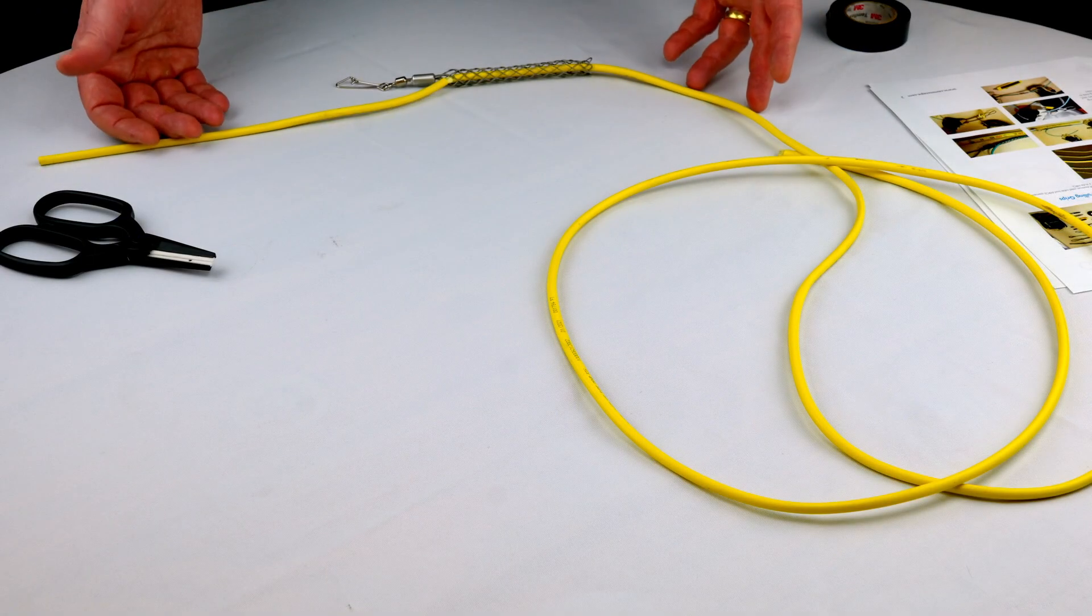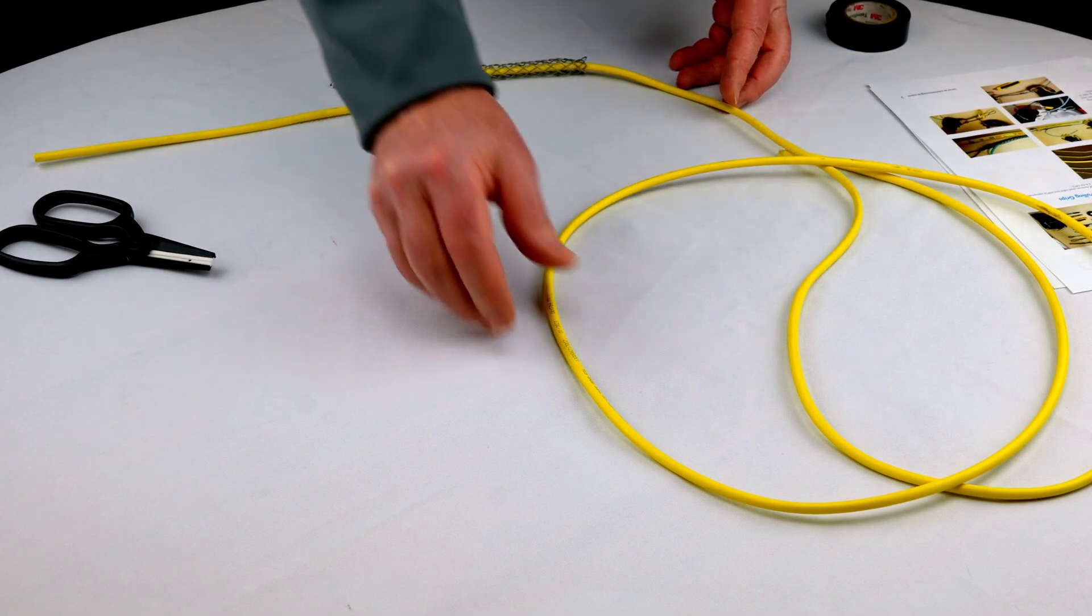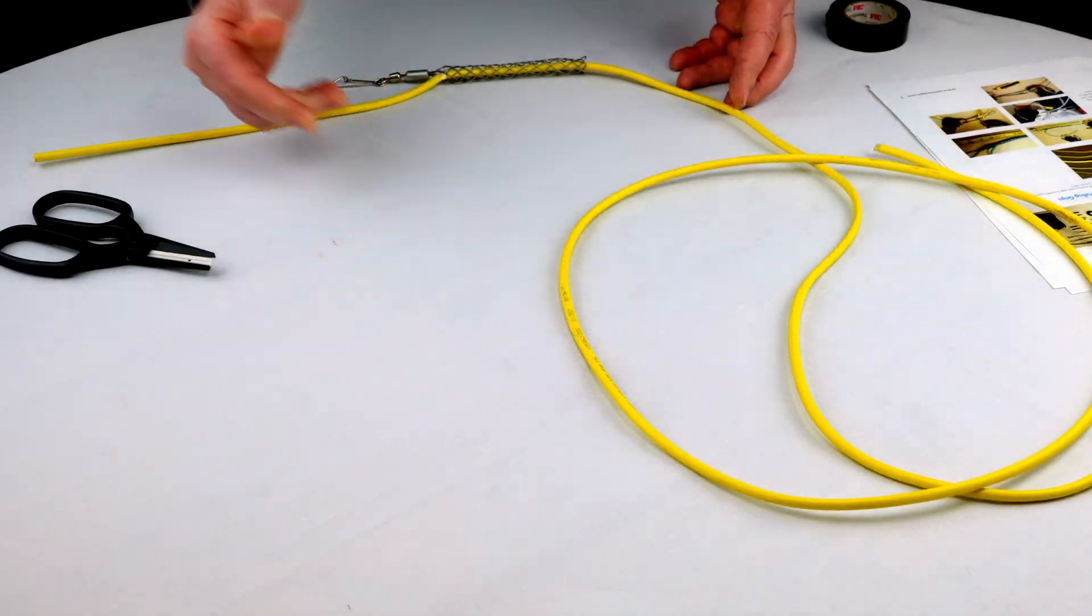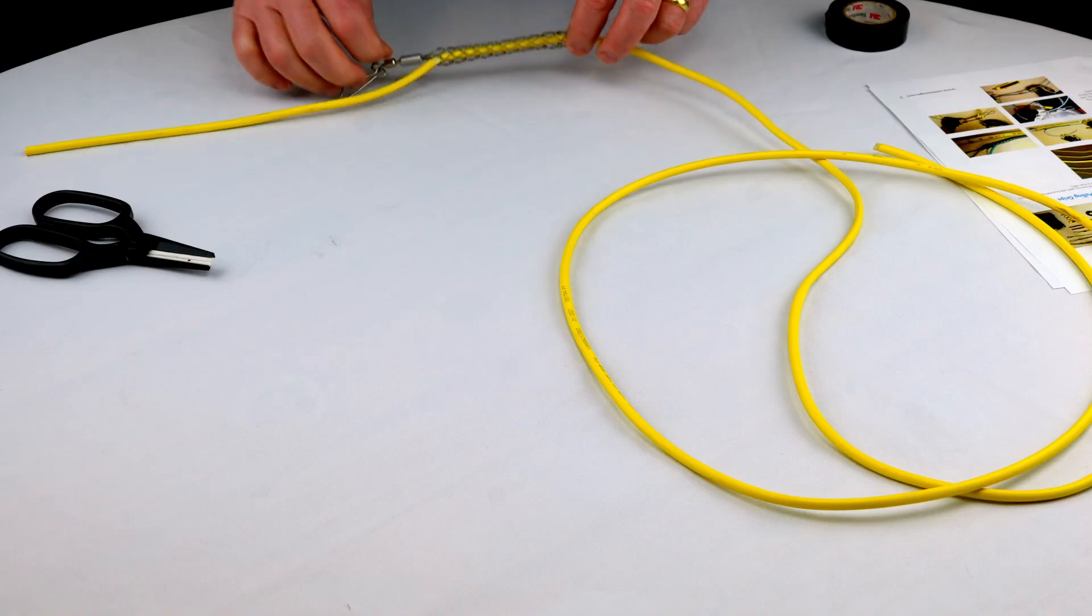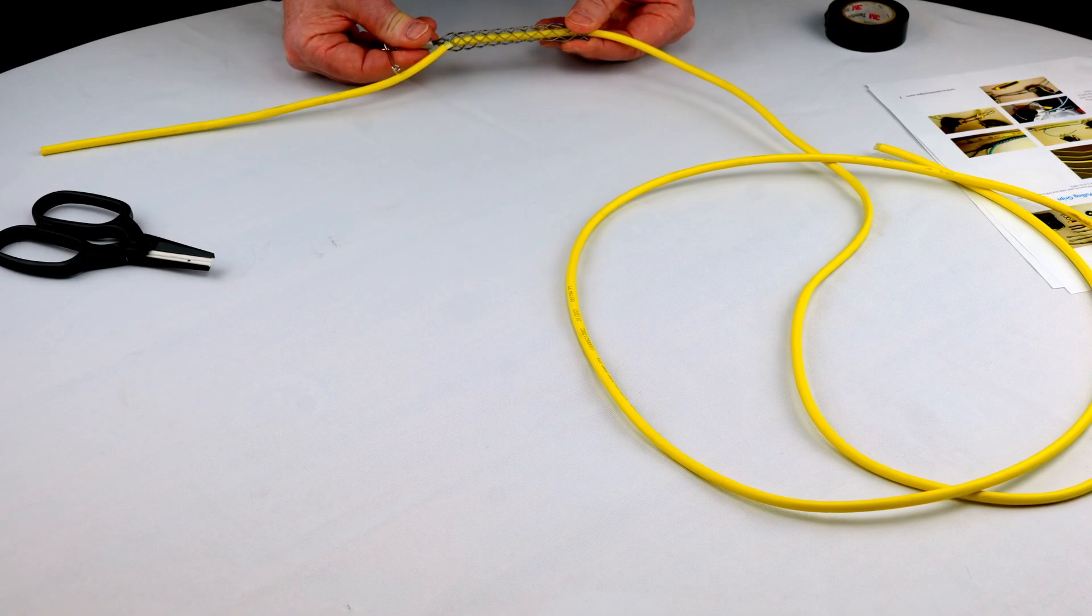Today we have a 12-strand single mode fiber with a plenum-rated jacket. This time we're going to use a wire mesh pulling grip.